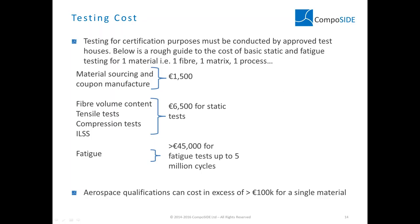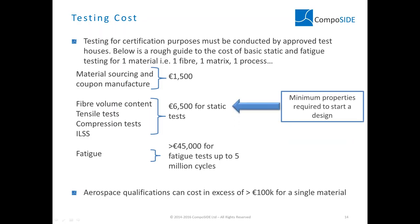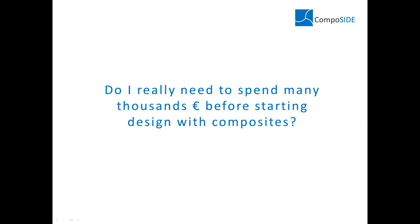Looking at testing costs: one material is one combination of fiber, matrix, and processing. The minimum you need to start design is 6,500 euros — that's about one month to get data before you can even start your design. For fatigue analysis, this is greater than 45,000 euros, very typical for wind and industrial applications. So do you really need to spend thousands of euros before starting a composite design? On one side you have established composite players with in-house databases; on the other, companies exploring composites facing expensive entry tickets. This is where the CMDB add-on comes in.